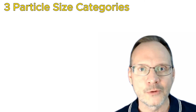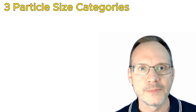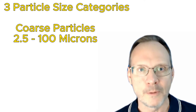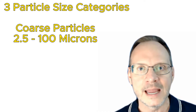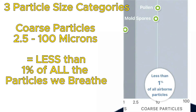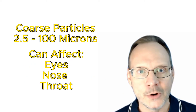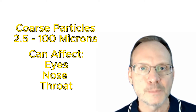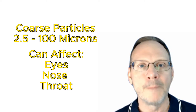There are three different particle categories based on size ranges. The largest particles in the air are called coarse particles, and they are 2.5 microns to 100 microns in diameter. Since we can see particles that are 40 microns and larger, we can actually see some of these particles. Examples of coarse particles can be pollen or mold spores. Importantly, coarse particles make up less than 1% of all the particles in the air we breathe. They may irritate our eyes, nose, and throat, but they are not the most dangerous particles to humans — our natural defenses do a better job of handling them.